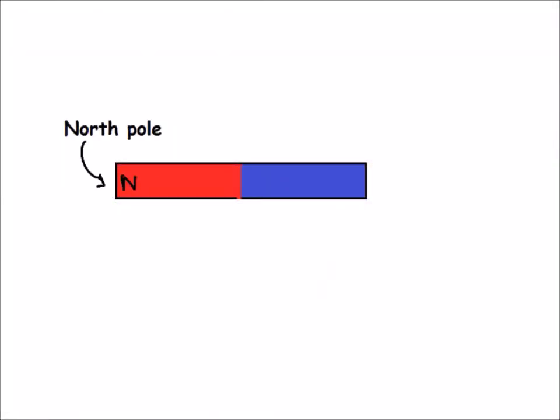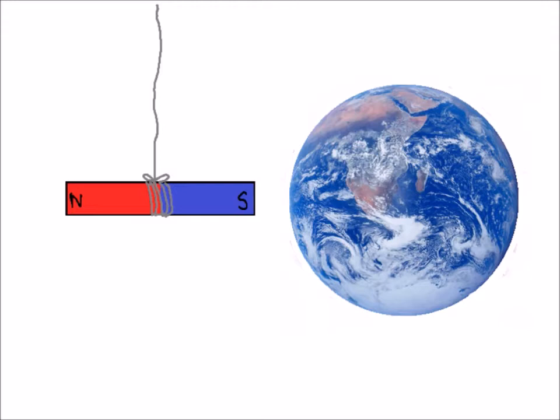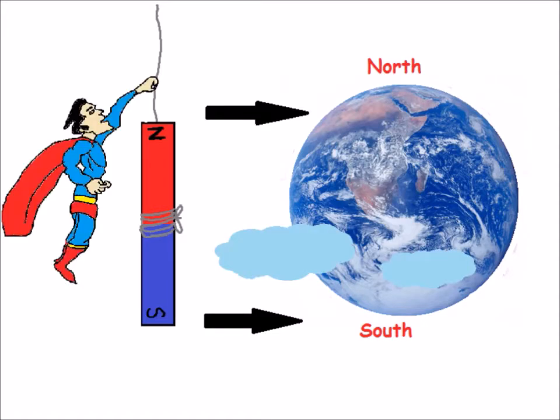Every magnet has two poles: North Pole and South Pole. If you tie a piece of thread around a bar magnet and hang it freely in air, the magnet will align itself so that the North Pole points to Earth's North Pole. Similarly, the South Pole will point to Earth's South Pole.